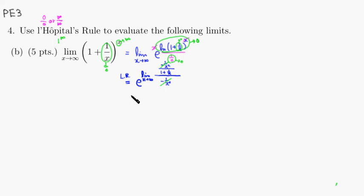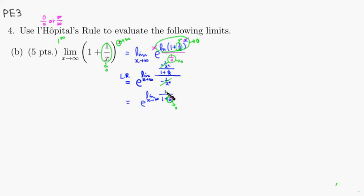What we get is e to the limit as x approaches infinity. On top you get 1, and on the bottom you have 1 plus 1 over x. As x approaches infinity, 1 over x approaches 0, so the whole thing goes to 1 over (1 plus 0), which is 1. So you get e to the first power, which is e. That's it — I hope that was clear.